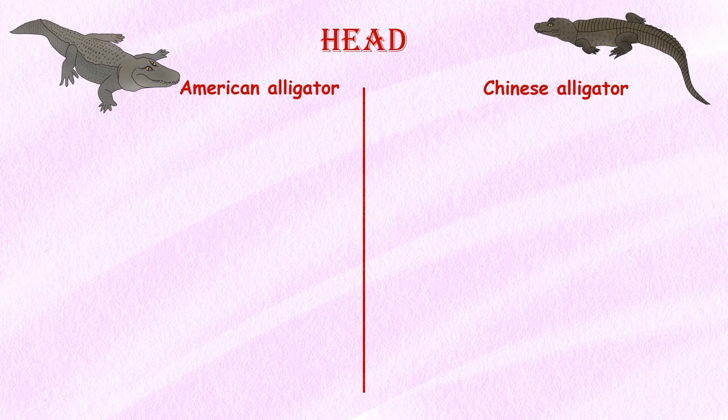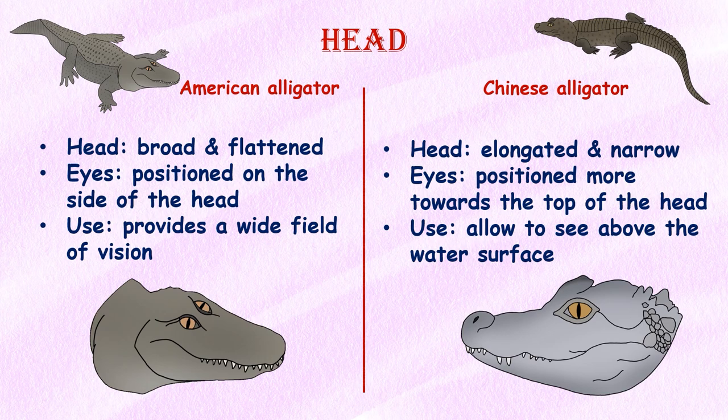Head. The head of the American alligator is broad and flattened. The eyes are positioned on the sides of the head, which provides a wide field of vision, making it easier to spot prey or predators. In contrast, the head of the Chinese alligator is more elongated and narrow. The eyes of the Chinese alligator are positioned more towards the top of the head, which allows them to see above the water's surface while remaining concealed below.